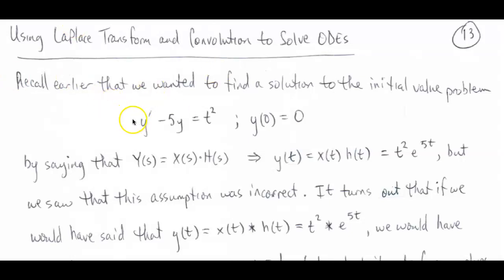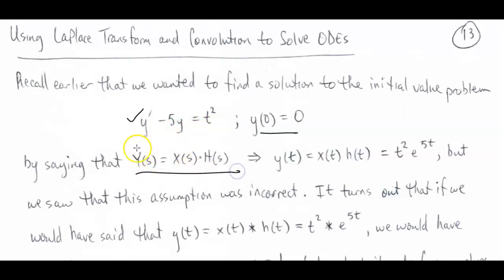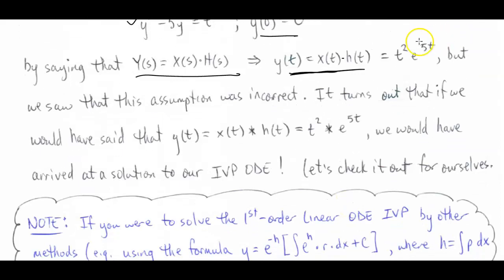We want to recall that we had this particular first order linear ordinary differential equation with this initial value condition. Notice that what we proposed in the first video is that if we took the Laplace transform of both sides and said the Laplace transform of y equals the product of two Laplace transforms, that would equal x(t) times h(t) for the actual solution — but we saw that this didn't work. It turns out that doing the convolution of these two functions would have worked, and I'm going to demonstrate that here.